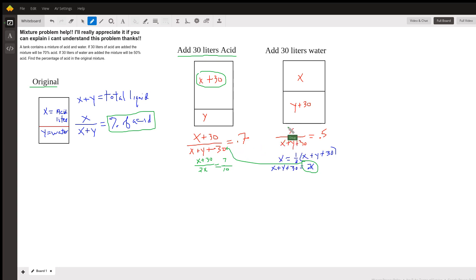If I solve this one for x plus y plus 30, I'm multiplying both sides by the denominator. I converted this 0.5 to a one-half. I can see that x plus y plus 30 equals 2x, and now if I substitute that into the other equation, x plus y plus 30 is 2x, I get x plus 30 over 2x equals 7 tenths.